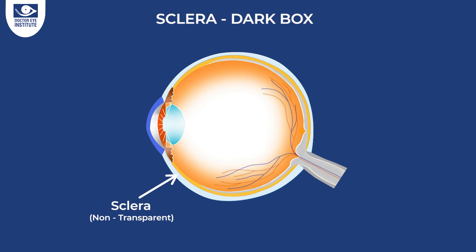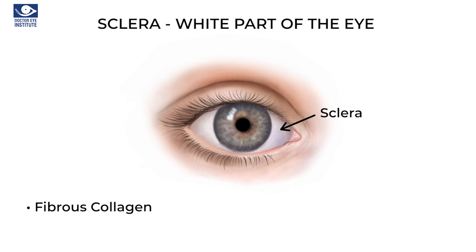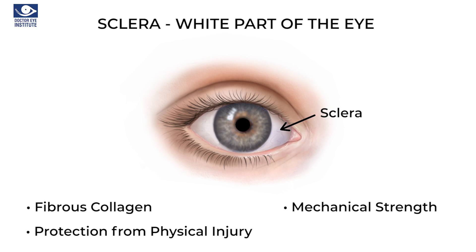Friends, let us now briefly discuss about the sclera. The sclera is the white opaque part that we see, which is approximately 24 mm in diameter. The non-transparency of the sclera prevents light from reaching the retina other than through the cornea, and together with the dark pigmentation of the inner layers of the eye, it acts as a dark box for image formation. It is composed of white fibrous collagen, which is responsible for the mechanical strength and thus protects the inner layers of the eye from physical injury. It also helps to maintain the ocular contour.